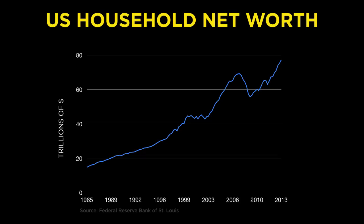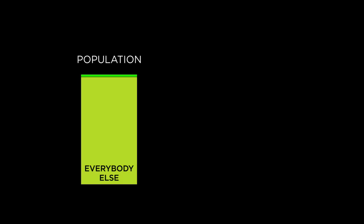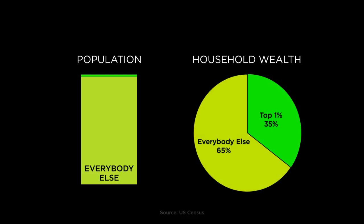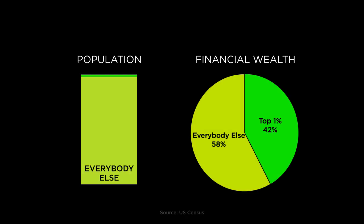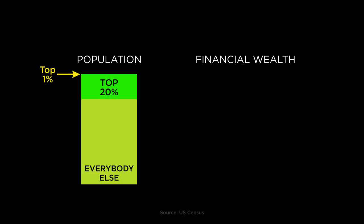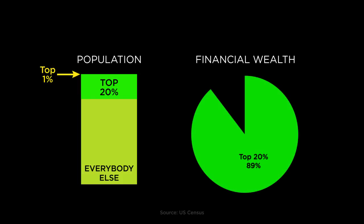Now let me expose two great oversights of this household wealth report. The first oversight is that the data is presented as if it applied to our entire country in a fairly even and useful manner — it does not. As of 2010, the top 1% owned 35% of all net household wealth, and looking at stocks only, owns 42% of all the country's financial wealth. So for every trillion dollars the stock market goes up, $420 billion of that newly created wealth goes to only 1 out of 100 households. The top 20% owns nearly 89% of all net household wealth and over 95% of all financial wealth in the U.S.